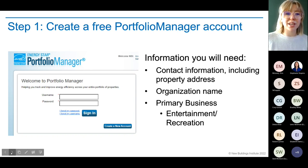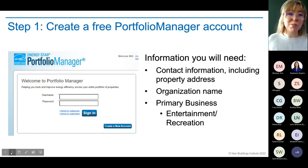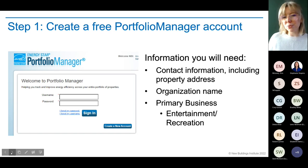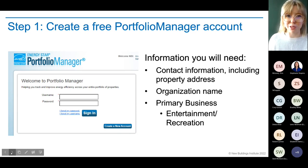I'm going to go through these steps at a high level and then do a quick live demo. Step one — creating your free Portfolio Manager account — is super easy, probably the easiest step. You just need your contact information, property address, and organization name. There is one question that asks about the primary business of your buildings. In this case, you want to choose entertainment/recreation, and then as you start adding individual buildings, you can get more specific and select the museum building type.